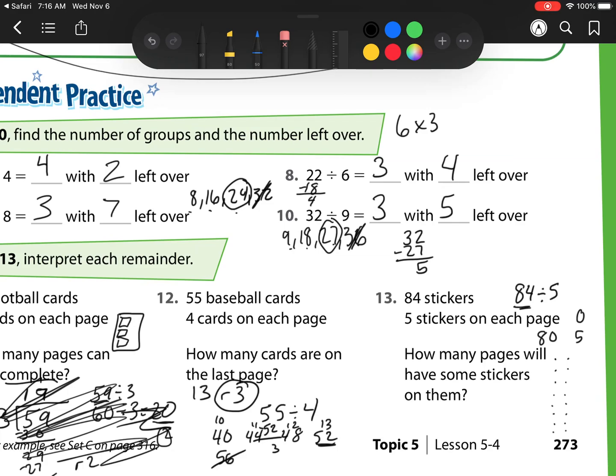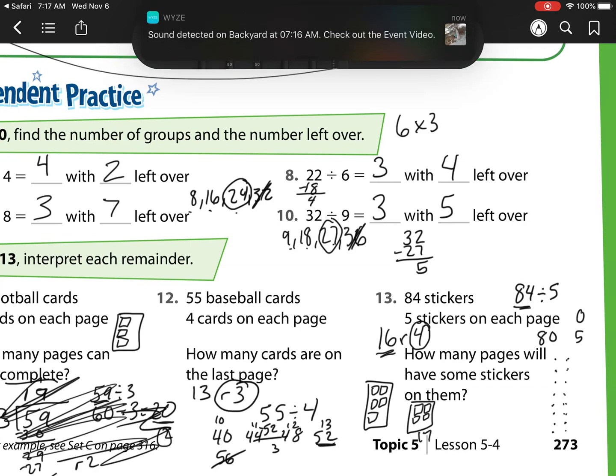So let's check how many groups that is. That's 1, 2, 3, 4, 5, 6, 7, 8, 9, 10, 11, 12, 13, 14, 15, 16. So I'd have 16, remainder 4. But now I have this problem. How many pages will have some stickers on them? Well, I'll have 16 complete pages. But that last page won't be complete. But it'll still have 4 stickers on them. So that last page, instead of looking like this, like all the others, it's going to look like this. And it's going to be missing that one right there. But it still has some stickers on it. So this one counts as having some. So I would have 16 plus 1, this last page, which is 17 pages.